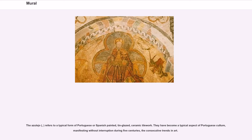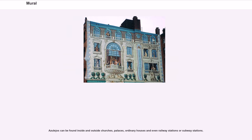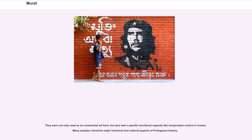The azulejo refers to a typical form of Portuguese or Spanish painted, tin-glazed ceramic tilework. They have become a typical aspect of Portuguese culture, manifesting without interruption during five centuries the consecutive trends in art. Azulejos can be found inside and outside churches, palaces, ordinary houses, and even railway stations or subway stations. They were not only used as an ornamental art form but also had a specific functional capacity like temperature control in homes. Many azulejos chronicle major historical and cultural aspects of Portuguese history.